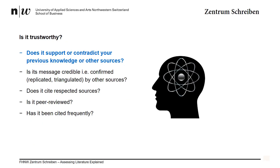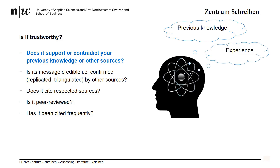Determining how trustworthy a text is will take a little bit more work. Trustworthy basically means honest and reliable, but if you're not super familiar with the topic or the author, how can you tell whether it's trustworthy or not? Rather than banning certain types of sources, I'm going to give you some strategies to judge the quality of a source yourself, because you should apply a certain amount of caution to all texts. The first thing you should think about is whether the information you're reading supports or contradicts your own previous knowledge and experiences. While this may not give you the final answer, it should heighten your awareness and then you should look to other sources.